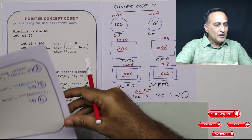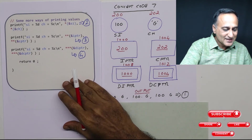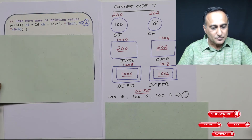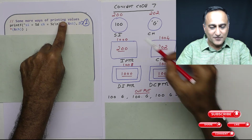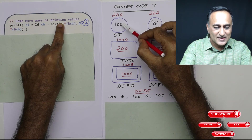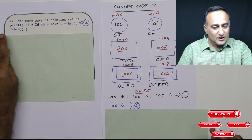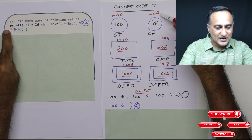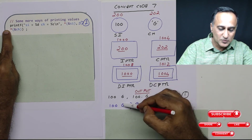Now let's look at some more ways of printing the values of si and ch. If I print address of si, it is 200. Star of that gives me the value at address 200, which is 100, so 100 is going to be printed. If I print address of ch, it will print 202. Star means what is the content at 202, which is G, so it is printing G.